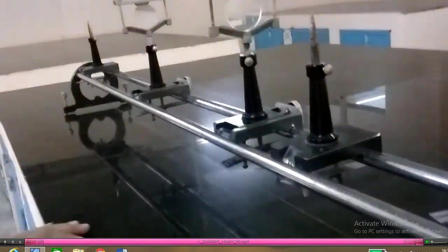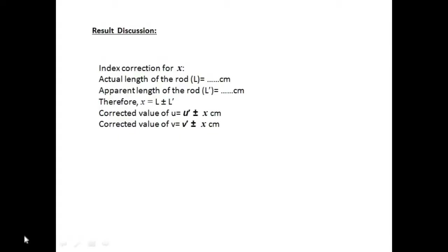Now we will go to the calculation part. The first thing you have to do is the index correction. For the index correction, you have to take the actual length of the rod — that is the length between the object tip needle and the image tip needle — and the apparent length, that is the positions of the object pin and image pin from the optical bench scale. The index correction is x = L ± L dash, and the corrected value of U = U dash ± x, or corrected value of V = V dash ± x. Details of the index correction are explained in our earlier videos.